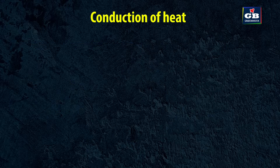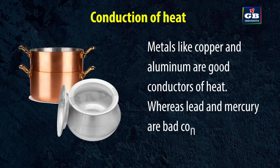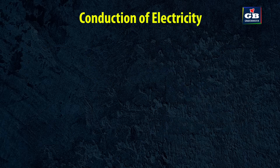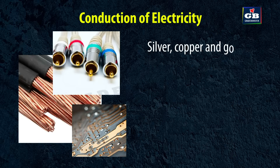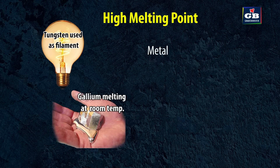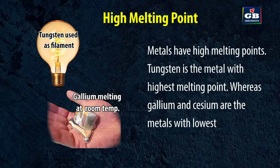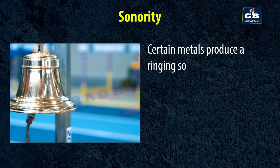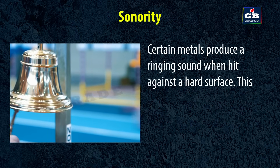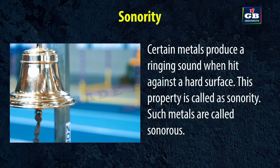Conduction of heat: metals like copper and aluminium are good conductors of heat, whereas lead and mercury are bad conductors of heat. Conduction of electricity: silver, copper and gold are good conductors of electricity. High melting point: metals have high melting points; tungsten is the metal with the highest melting point, whereas gallium and caesium are the metals with the lowest melting points. Sonority: certain metals produce a ringing sound when hit against a hard surface. This property is called sonority, and such metals are called sonorous.